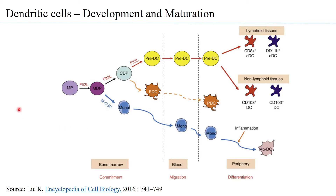Dendritic cells arise from hematopoietic stem cells, which lead to multipotent progenitor cells in the bone marrow that form common lymphoid progenitor cells. From there, monocyte dendritic progenitors are formed. From that point, a monocyte can differentiate — when it reaches the periphery — into monocyte-derived dendritic cells, or it can form pre-dendritic cells, which can then go into either lymphoid or non-lymphoid tissue and act as dendritic cells. This is one kind: conventional dendritic cells (cDC).